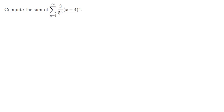Compute the sum of the series n going from 1 to infinity, 3 over 5 to the n times (x minus 4) to the nth power. This is just a different way of asking to find the function f(x) for whom this is the Taylor series.